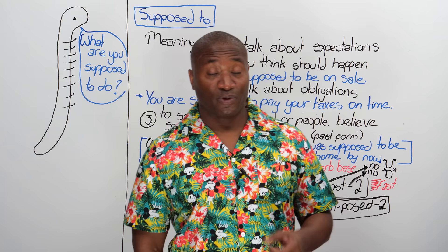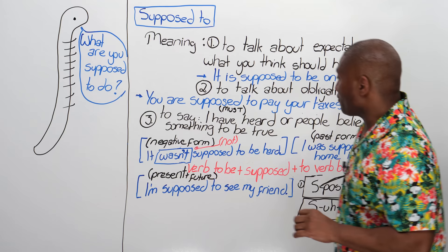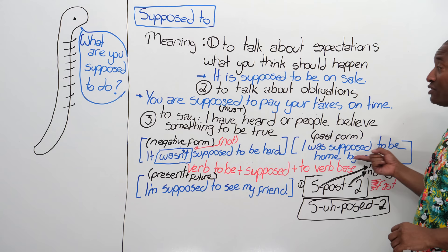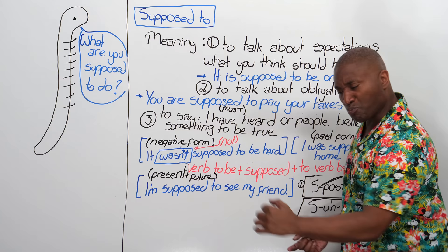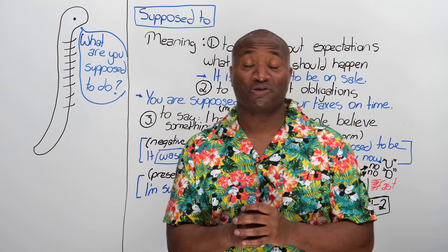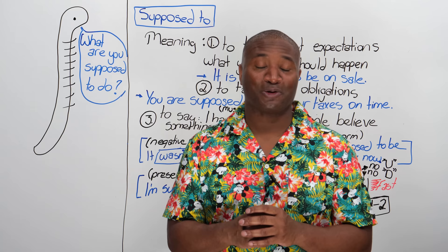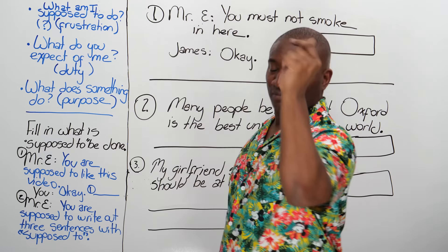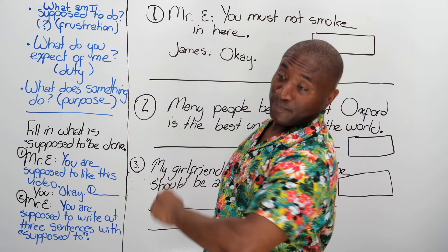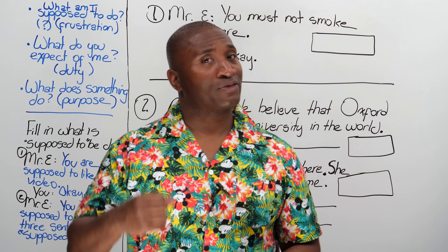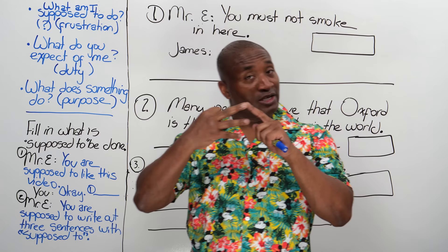We've gone over the three definitions. We've gone over the present and future form, the past form, the negative form, and even the negative past form. But it's not a lesson if we don't do our quiz and have a bonus feature and homework. So we were supposed to do our quiz, which we'll do now. Do you remember the three meanings for supposed to? Obligation, expectation, and belief.